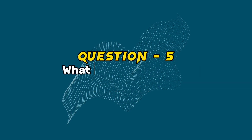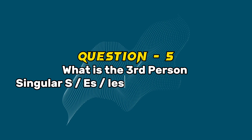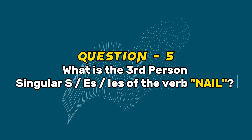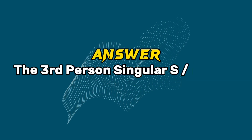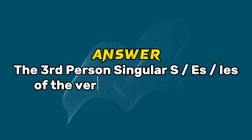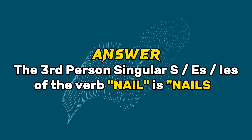Question 5: What is the third person singular (S/ES/IES) of the verb nail? Answer: The third person singular of the verb nail is nails.